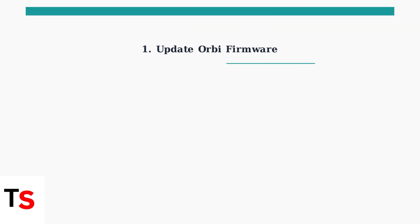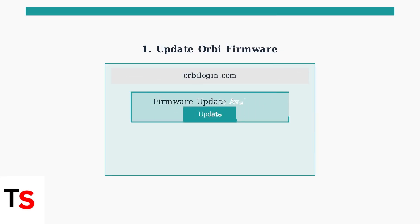First, ensure your Orbi firmware is up to date. Outdated firmware is a common cause of connection problems and security vulnerabilities. Access the Orbi web interface by typing orbilogin.com in your browser, then navigate to the firmware update section. Install any available updates and restart your system.